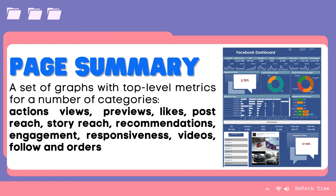Post engagement — a combined total of post likes, comments, shares, and other engagement. Responsiveness — an evaluation of how often and how fast you respond to messages. Videos — the number of video views of 3 seconds or more. Page followers — the number of new followers. Orders — your orders and earnings. This is the sample of the Facebook dashboard for the page summary of a Facebook page.